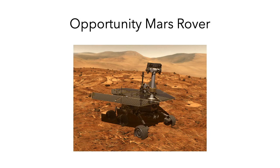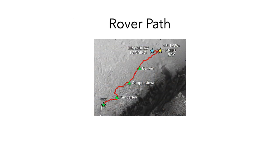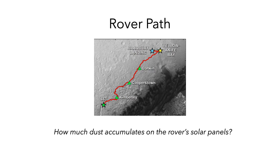The amount of dust it kicks up depends on the composition of the surface it travels over — a rockier surface kicks up less dust than a sandy surface. When planning a path for the rover to follow, scientists need to know how far it might travel before too much dust accumulates on its solar panels. They have mapped out a 100 kilometer path and collected satellite data about the surface composition at various points along the route. The goal is to figure out how much dust accumulates on the rover's solar panels.